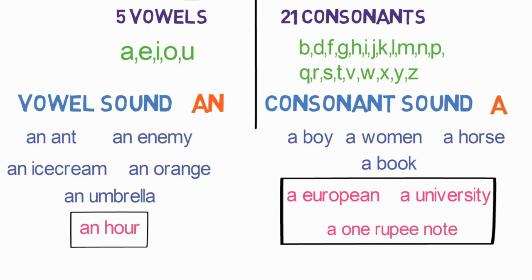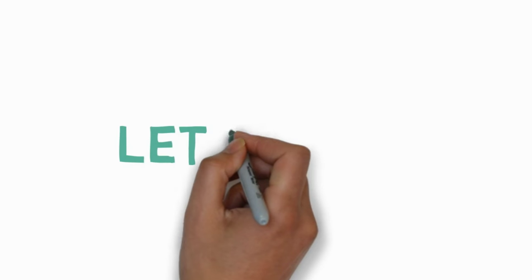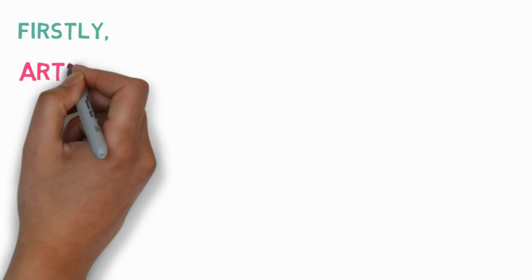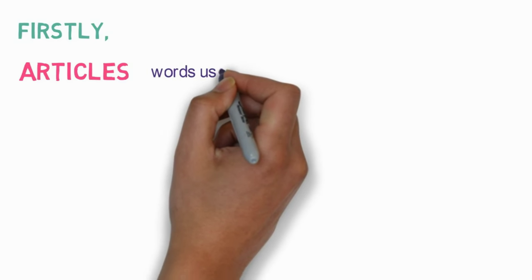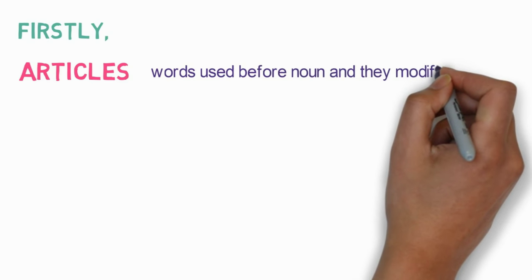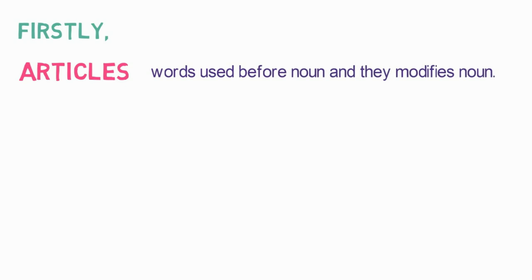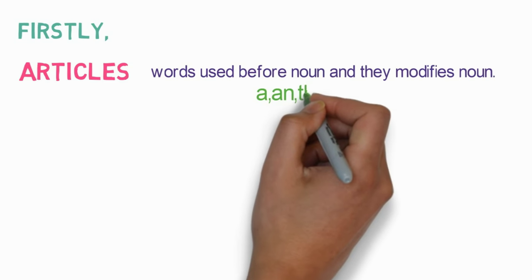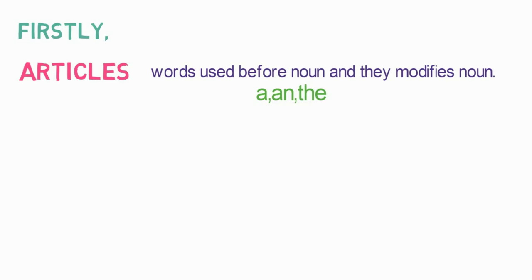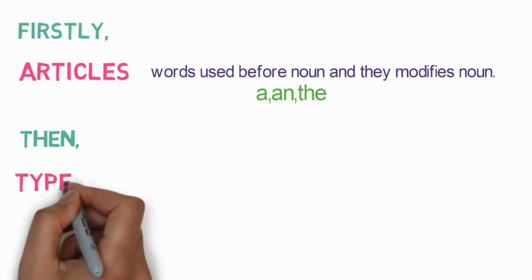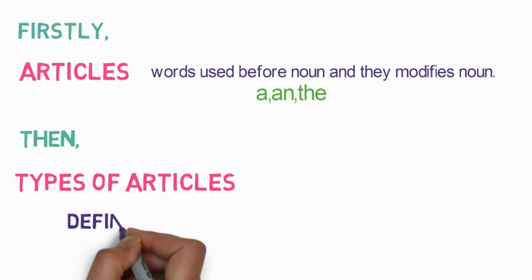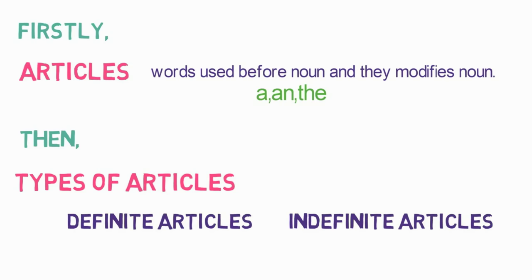That's pretty much it about articles in this video. Let's quickly revise what we learned. First, we understood what articles are: words used before nouns that modify nouns. There are three articles in English: a, an, and the. Then we learned the two categories these articles are divided into: definite articles and indefinite articles. 'The' is a definite article, and 'a' and 'an' are indefinite articles.